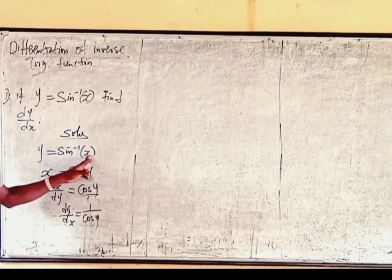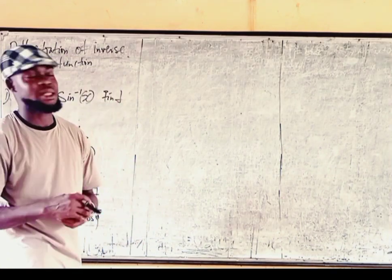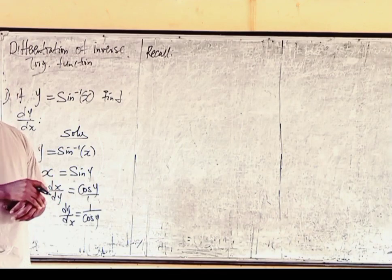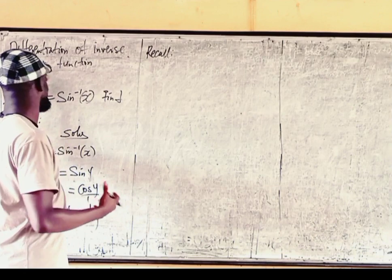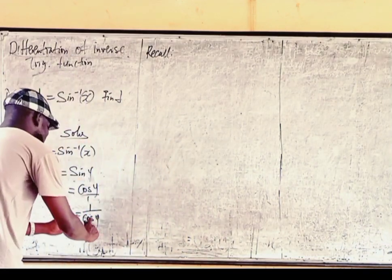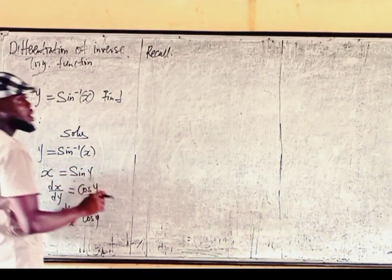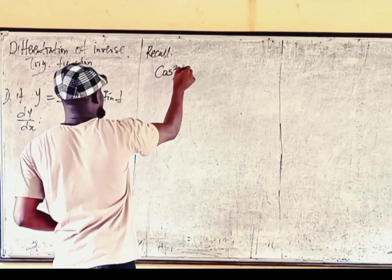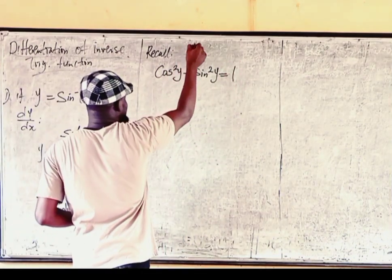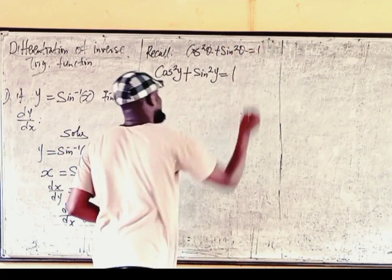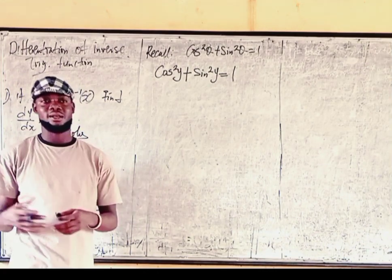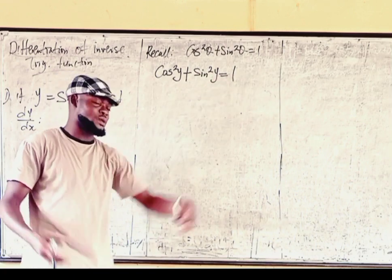Because the question is a function of x, the answer should also be a function of x. So we are going to recall something from a trig identity. Trigonometry has the identity: cos squared y plus sin squared y equals 1. We are going to look at what identity relates sin and cos together. This identity is valid for any angle.